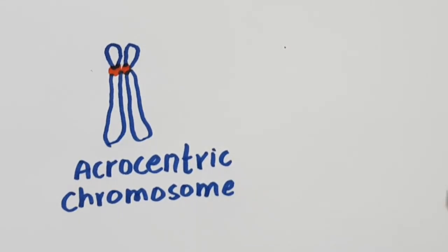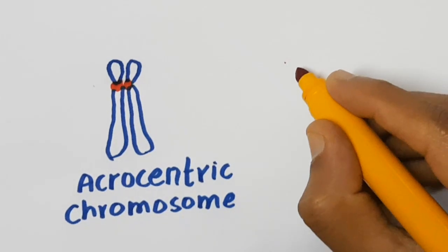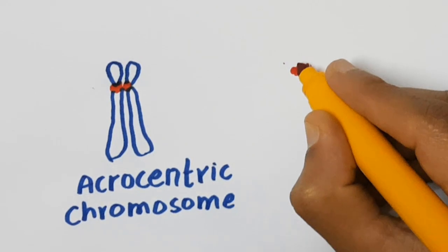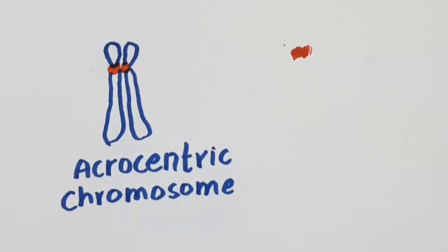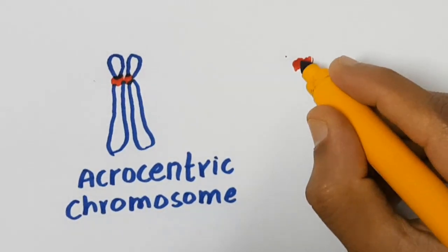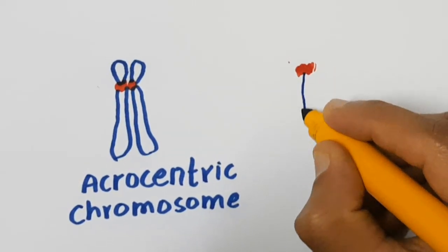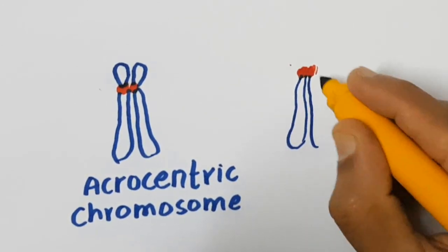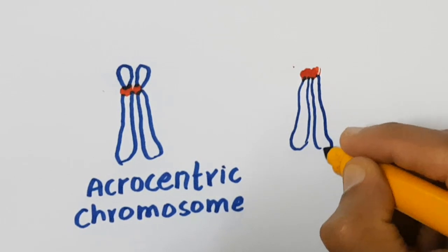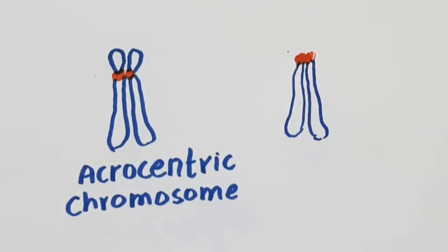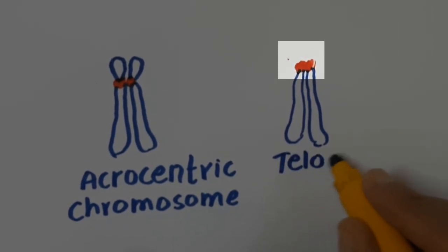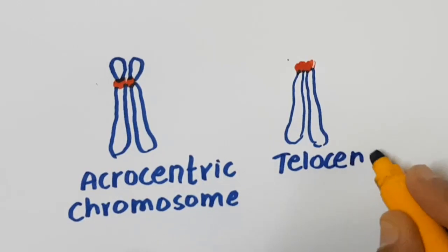The last type is telocentric chromosomes. In telocentric chromosomes, the centromere is at the terminal position or at the tip of the chromosome. The tip of the chromosome is called the telomere, hence telocentric chromosomes. The centromere is positioned in such a way that one arm is extremely short, such that it cannot be seen, and another arm is long.